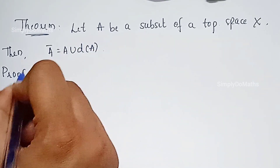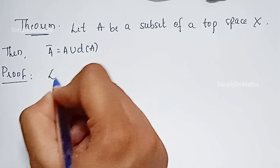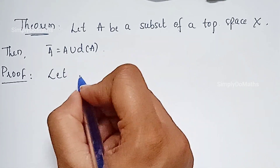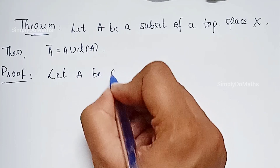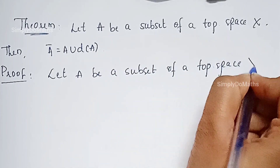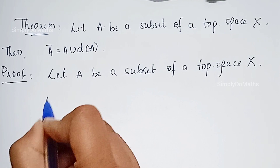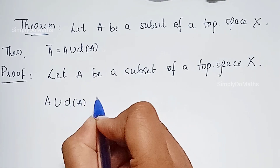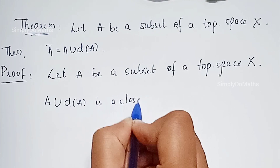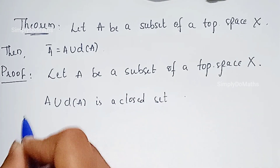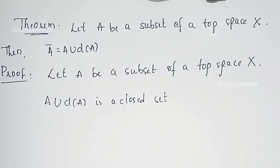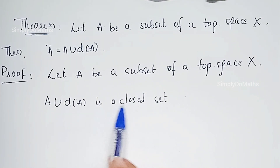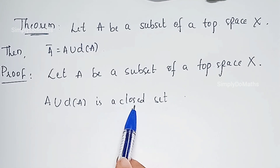Let's prove this. Given that A is a subset of a topological space X, which implies A union derived set of A is a closed set. That is a very important property of topological space — A union derived set of A will always be a closed set. Keep this in mind.